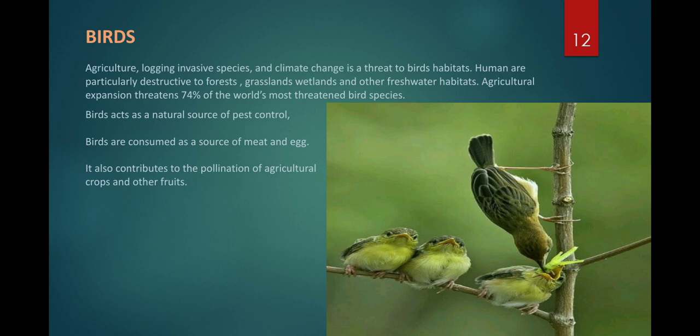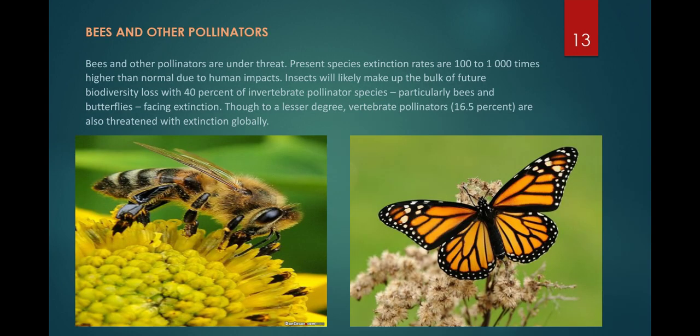Birds are not only a source of meat for people but also a source of pollination, bringing pollination for plants and crops. They are also a natural control for pests — we have recently seen a rodent attack in Australia. In the picture, you can see a locust being fed to younger birds by an elder one.